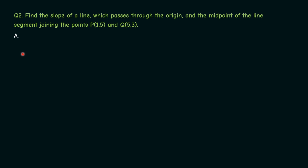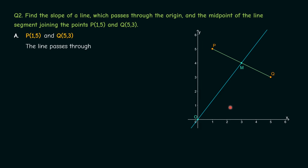Let's try to solve this. First let us visualize this on a Cartesian plane. We are given two points P(1, 5) and Q(5, 3), and PQ is the line segment joining them. Let M be the midpoint of PQ, and we need to find the slope of the line that passes through the origin and M.